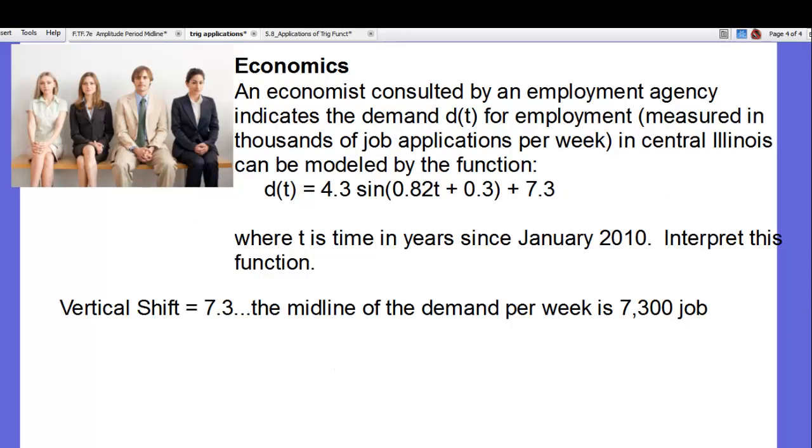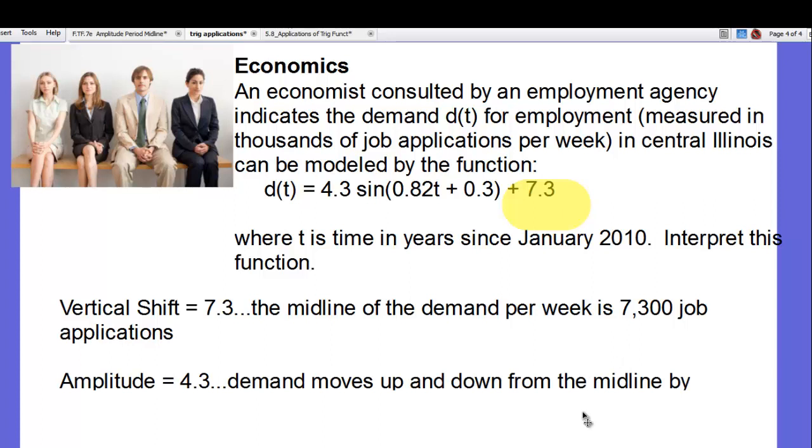Well, the vertical shift is 7.3. That's the midline of the demand per week, and it's at 7,300 job applications per week. Amplitude, 4.3. That means the demand moves up and down from midline by as much as 4,300 applications per week. So at its maximum, they're going to add to each other, and you'll have 11,600 applications per week, and at its minimum, you'll have 7,300 minus 4,300, or about 3,000 jobs per week.